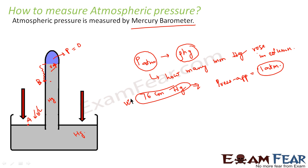So atmospheric pressure is measured with a Mercury barometer. It consists of a trough containing Mercury and a tube containing Mercury closed at one end, placed inverted in the trough. The amount of pressure the atmosphere exerts on the Mercury in the trough is proportional to the increase in the Mercury column in the tube — the greater the atmospheric pressure, the greater the height Mercury reaches in the column.